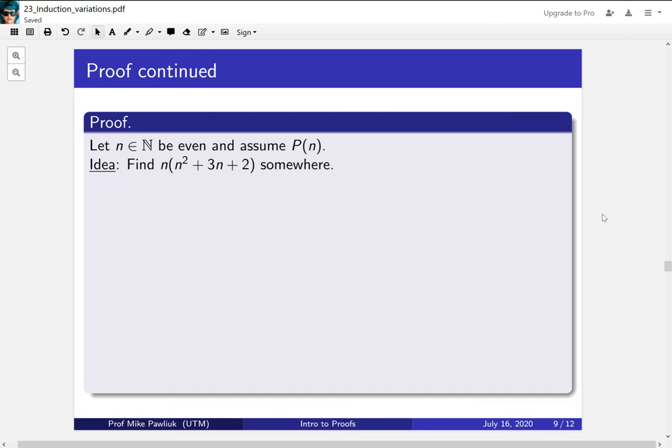So let little n be an even natural number and assume that p of n is true. Our goal is to find this term somewhere, because that's the term that we will get from p of n. p of n tells us that that term is divisible by 24. So this is the term that we care about now for p of n plus 2. We want to show that this is a multiple of 24. Now, before we continue, I want you to expand this. Take a moment, write it down, expand it out, see what you get, and look for this type of term: an n times (n squared plus 3n plus 2). It's very instructive for this example, because the hard part is finding this. And for some of you, the hard part will be doing the algebra, but hopefully that's not too hard. So take a moment now to expand this.